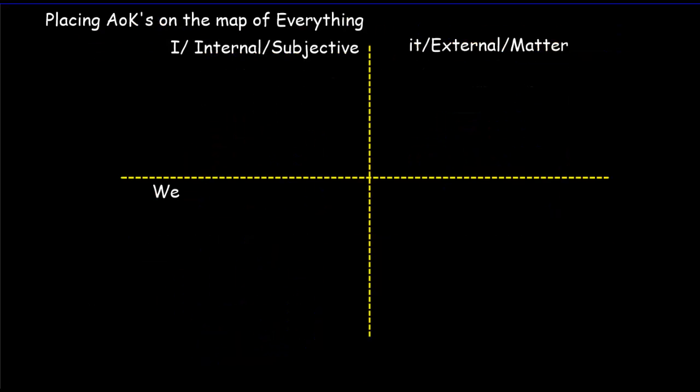Now what I'm going to do is take seven of the eight areas of knowledge and plot them on the map of everything. I'm not going to plot how we get that knowledge. I'm plotting what it is we're really after in that area of knowledge. So let's start with the natural sciences. And in the natural sciences, that is, subjects like chemistry and physics and biology, we're studying matter. And we want to know the truth about matter. And so I definitely place the natural sciences up here.